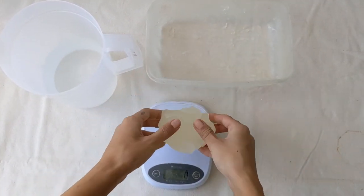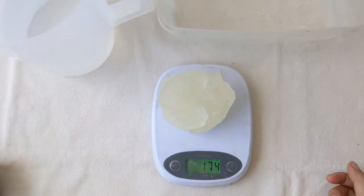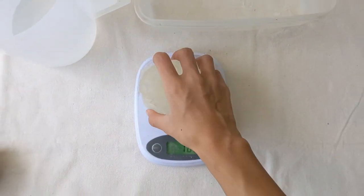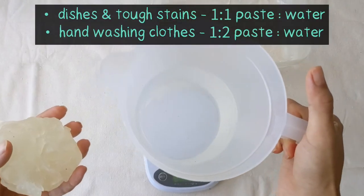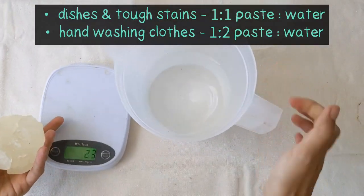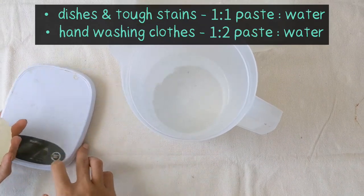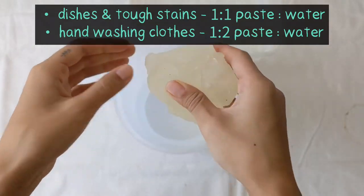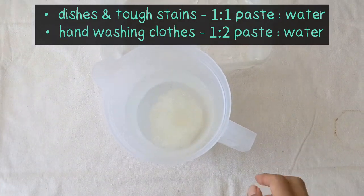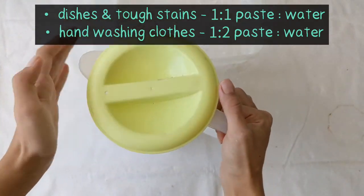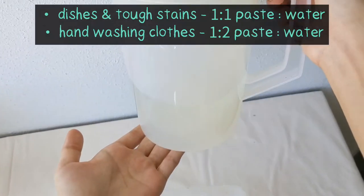And now I will show you how to dilute your soap paste into liquid soap. So first, weigh it out. If you want a stronger soap to wash tougher stains and dishes, dilute it with a ratio of 1 to 1 soap paste to water ratio. But if you want a gentle hand washing liquid soap, then dilute it with a 1 to 2 soap paste to water ratio like I did here.